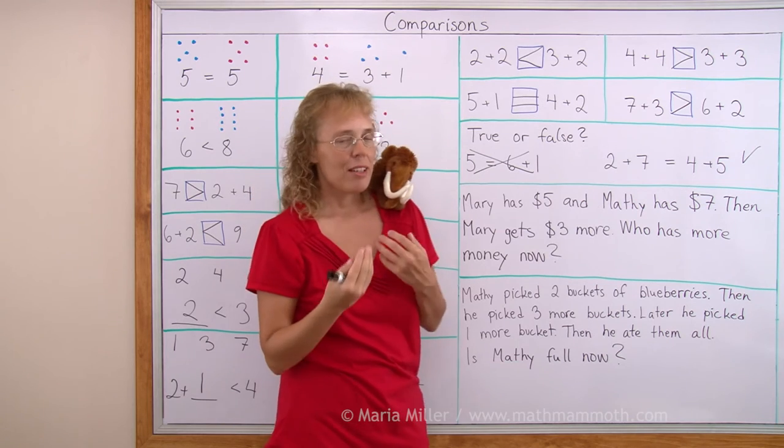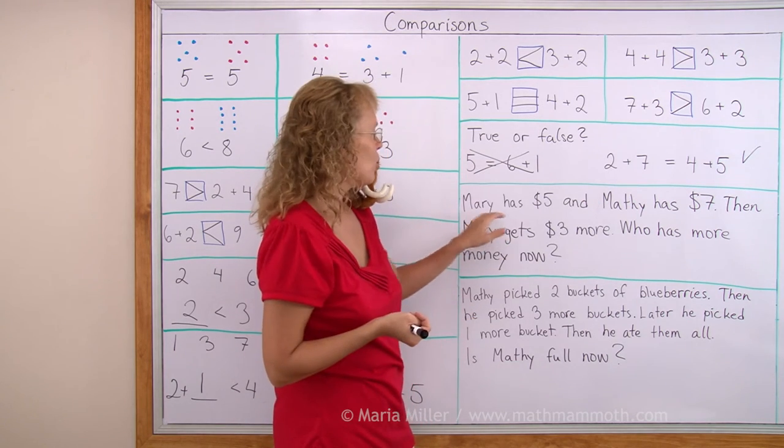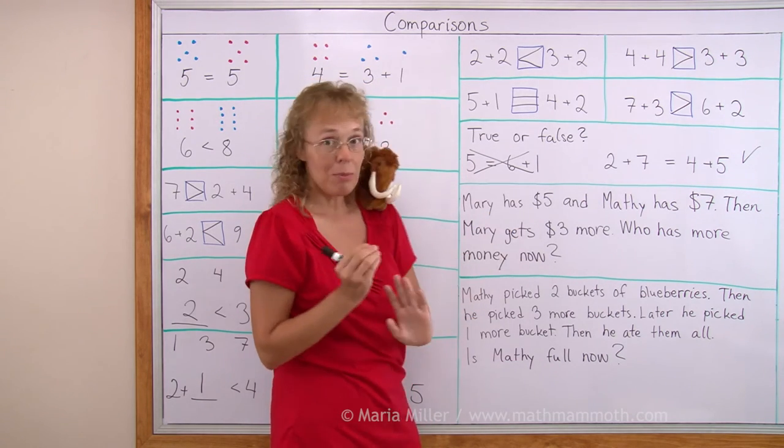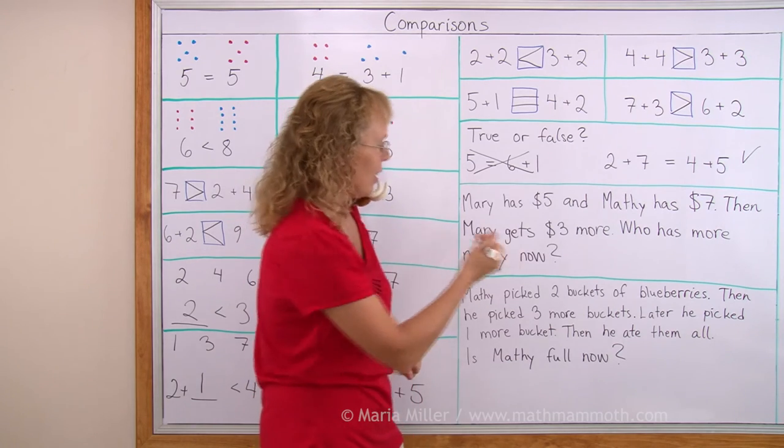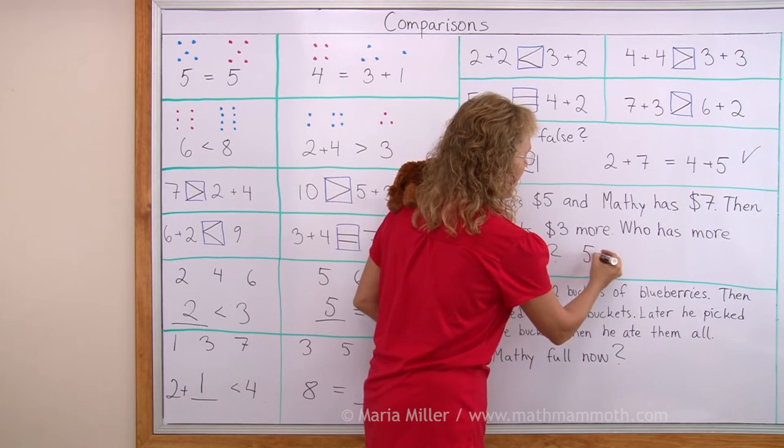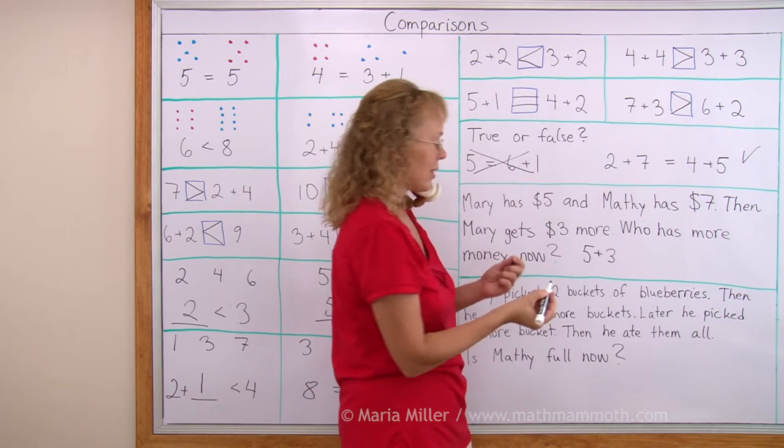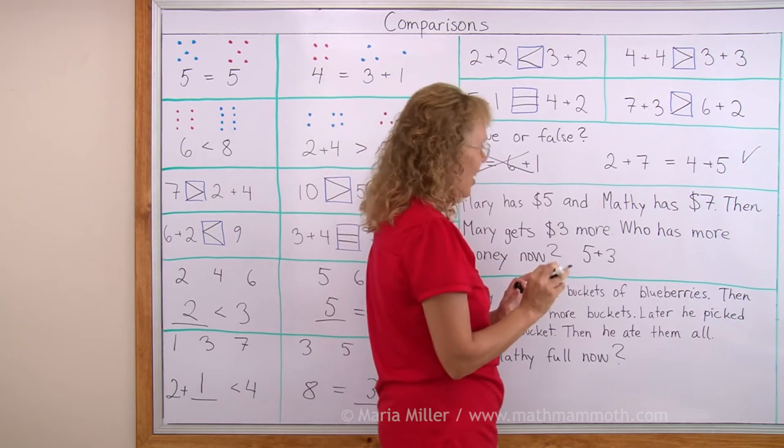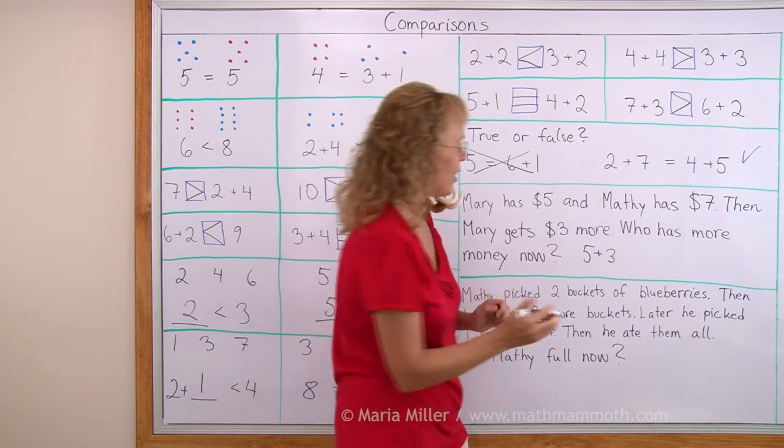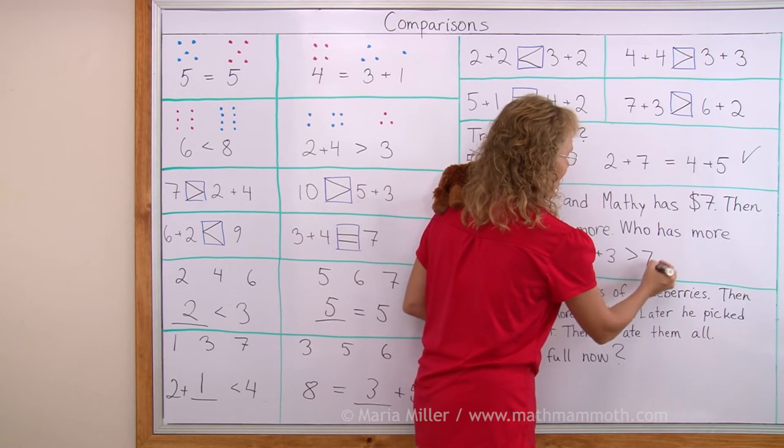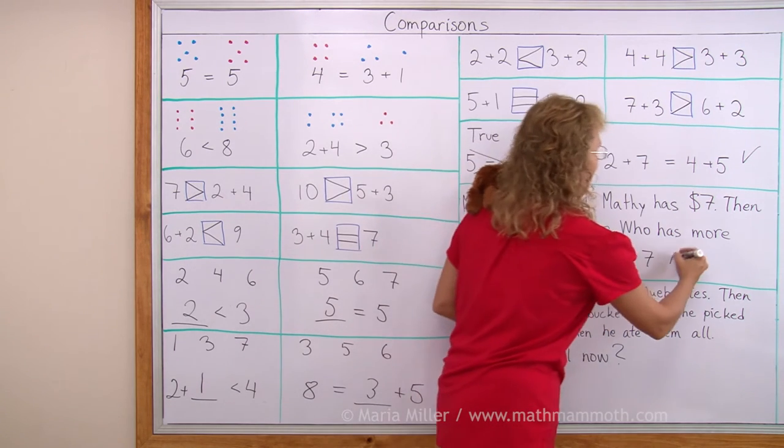Okay. How much does Mary have now? Mary used to have 5. Mary gets 3 more. Now Mary has 5 plus 3. That's 8. And so Mary has more money now. 8 is greater than 7. Mary has more money now.